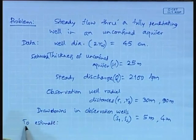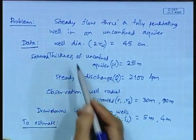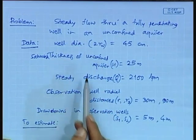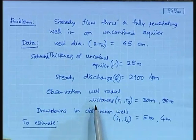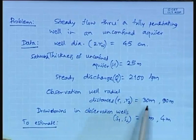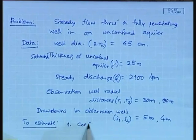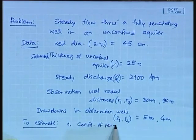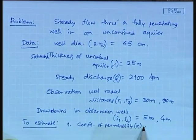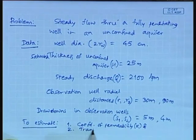Based on this data — well diameter, saturated unconfined aquifer thickness, steady discharge, observation well radial distances from the center of the well (r1 and r2), and drawdowns in these two observation wells — we are to estimate the coefficient of permeability k and transmissivity T.